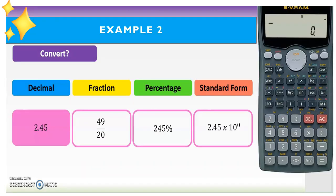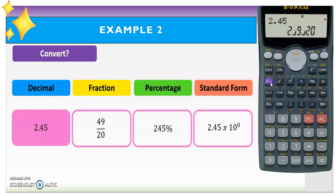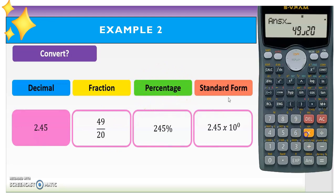You can use a calculator to convert. For example 2: starting from decimal form 2.45 — convert to fraction form. You may write it as a mixed number or in improper fraction form, which is 49 over 20. To convert to percentage form, multiply by 100, so the answer is 245%.